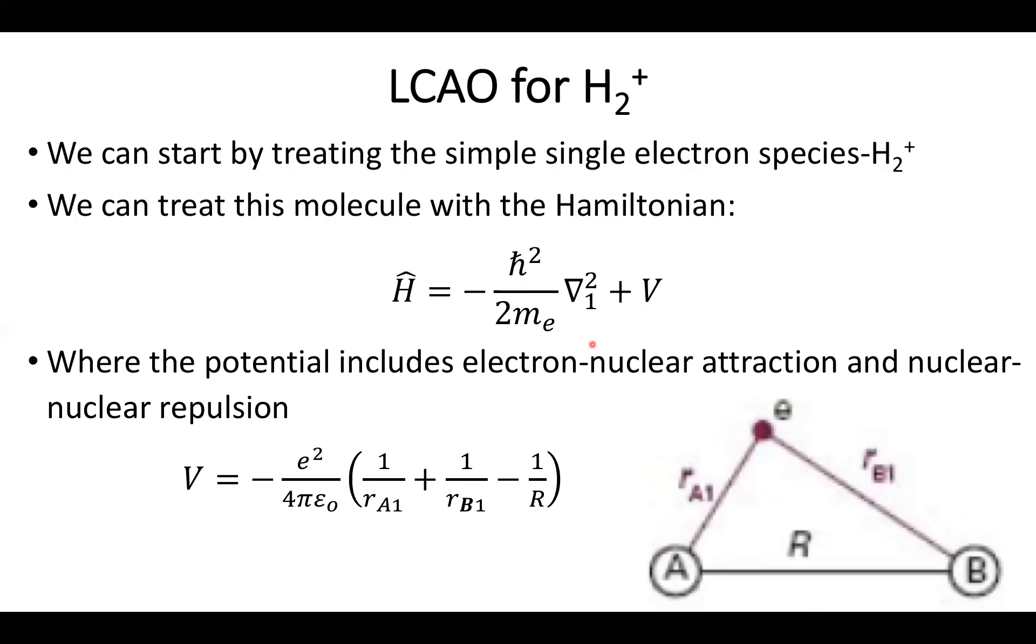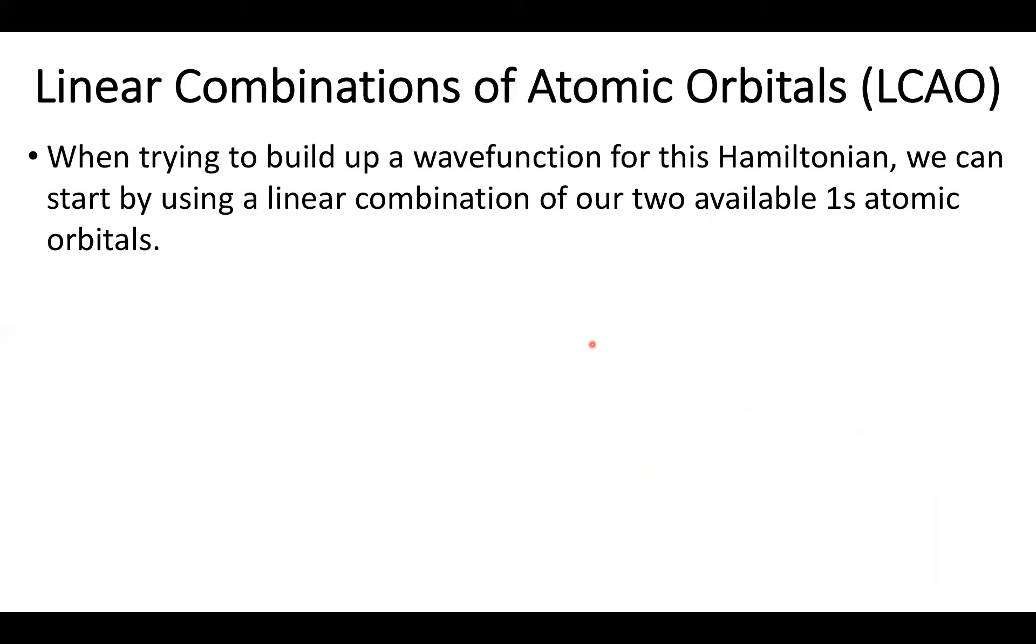So we're going to try and build up our wave function for this Hamiltonian, more or less the same way we did with VSEPR, but with a little bit more detail. So we're going to make a linear combination of our two available 1s atomic orbitals. So these are our good old friend, the 1s hydrogen orbital. And this theory is called linear combinations of atomic orbitals for a reason.